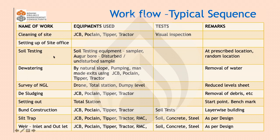You need to have soil testing. Equipment used includes a sampler and auger board — you can take a disturbed or undisturbed sample. Sampling may be at a prescribed or random location. Then comes a major part of execution: dewatering. You need to see whether it can happen through natural slope or if you need intervention of machines — pumping — or making exits using a JCB. You need to ensure the next operation, which may be desludging, can proceed.